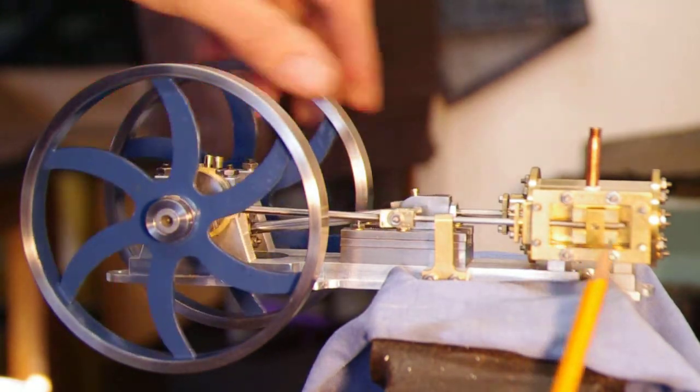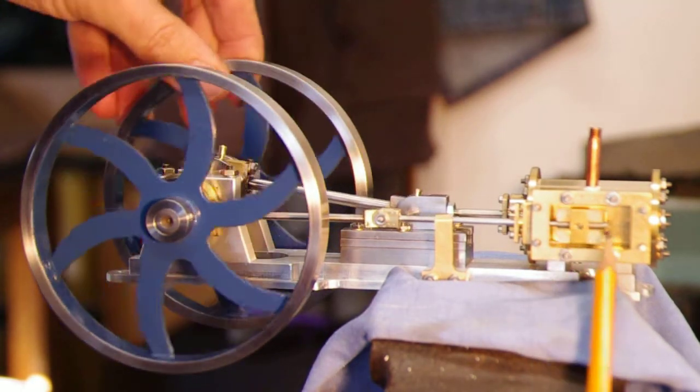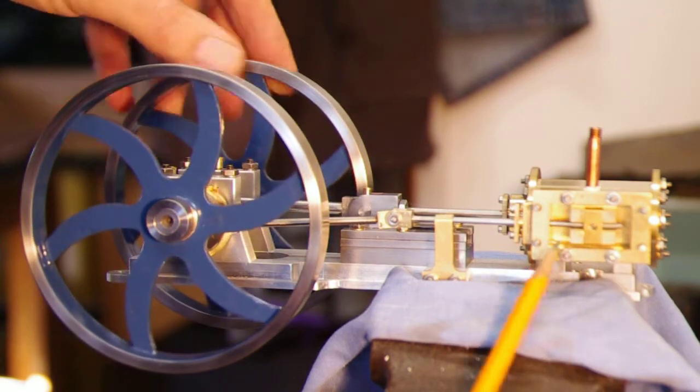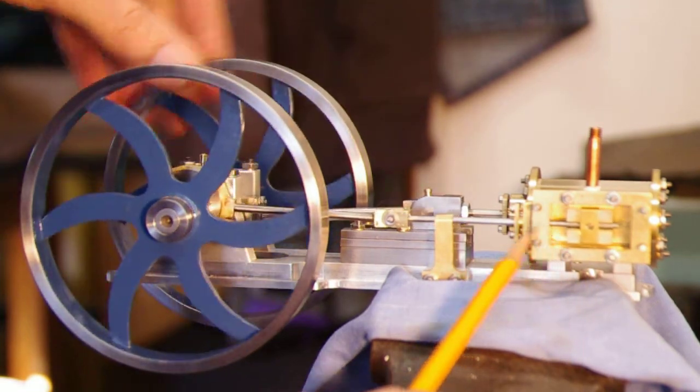This is the steam chest. It has a sliding valve here—you can see an aperture open there and another one that opens back here based on the timing.